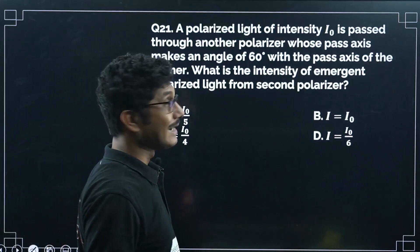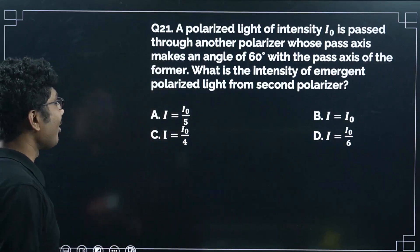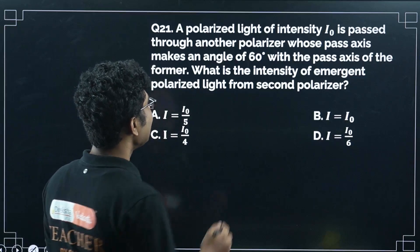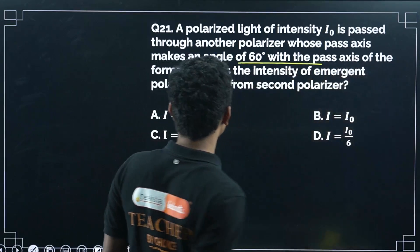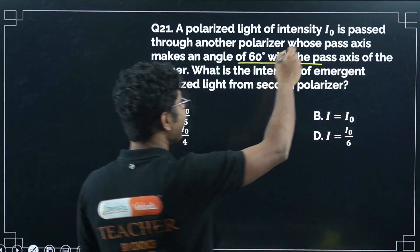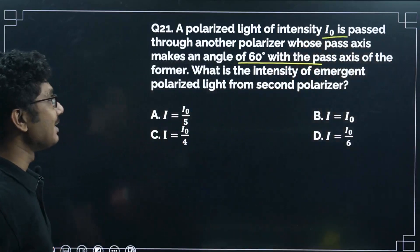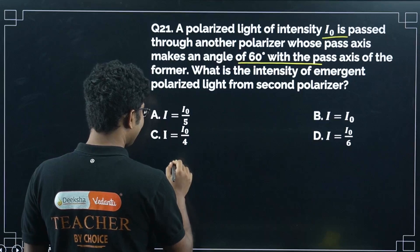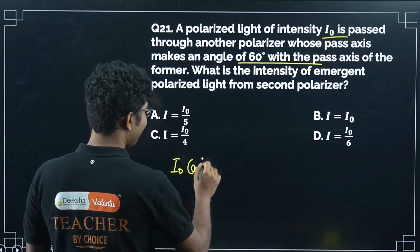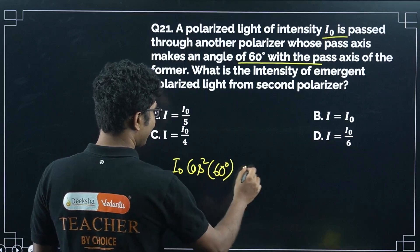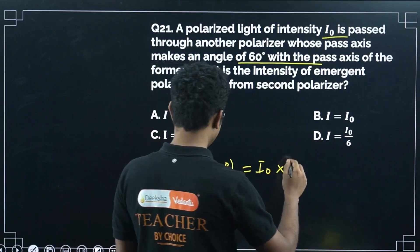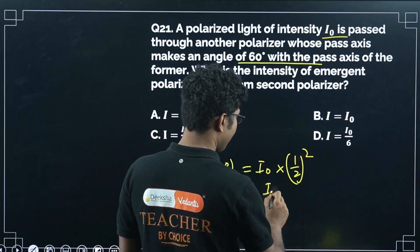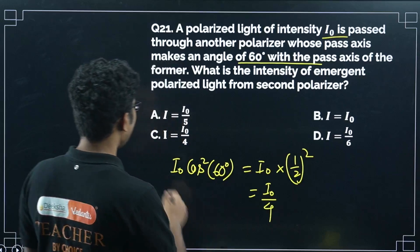A polarized light of intensity I₀ is passed through another polarizer whose pass axis makes an angle of 60° with the pass axis of the former. Intensity of emergent light = I₀ cos²60° = I₀ × (1/2)² = I₀/4. Correct answer is I₀/4.